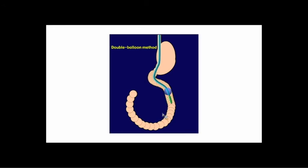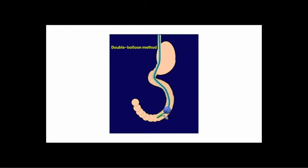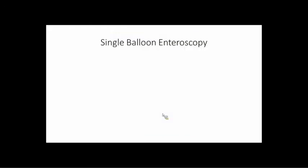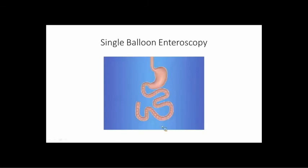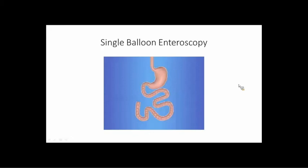You blow up both balloons to get a grip on the mucosa, then pull back and reduce the whole thing to shorten the small bowel, then deflate your scope balloon and advance the scope further — lather, rinse, repeat. That way you shorten the small bowel and get progressively further in. Single balloon enteroscopy works similarly, except there's no balloon on the scope itself — you use a hooking technique with the overtube balloon to engage the mucosal folds.